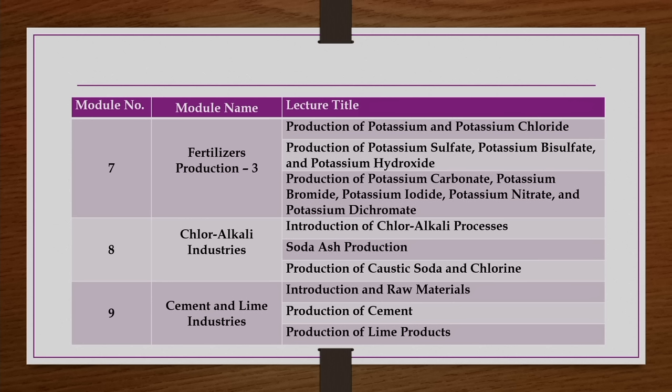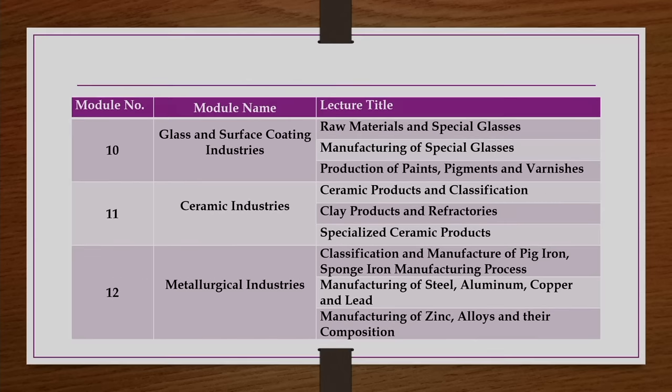Eighth week we will discuss chloralkali industries — production of soda ash, caustic soda, and chlorine. Ninth week covers cement and lime industries — available raw materials, production of cement, and lime products. Tenth week covers glass and surface coating, eleventh week covers ceramic industries, and twelfth week covers metallurgical industries including classification and manufacture of pig iron, sponge iron, steel, aluminum, copper and lead, zinc, alloy composition, etc.